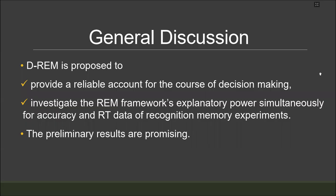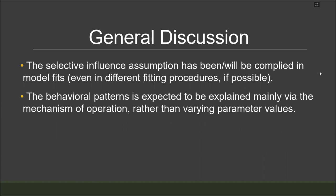D-REM model was proposed to provide a reliable account for the course of decision making and investigate the REM framework's explanatory power simultaneously for accuracy and response time data of recognition memory experiments. The preliminary results of the study are promising, but there is still much work to be done, as I often noticed the future directions of the current project. The model is expected to explain the targeted findings that are previously noted by its main mechanisms rather than freely varying parameter values. Therefore, finding the best fitting parameter values for the data is a secondary concern. These are the main goals, but the success of the model will show to what extent these goals are reached.